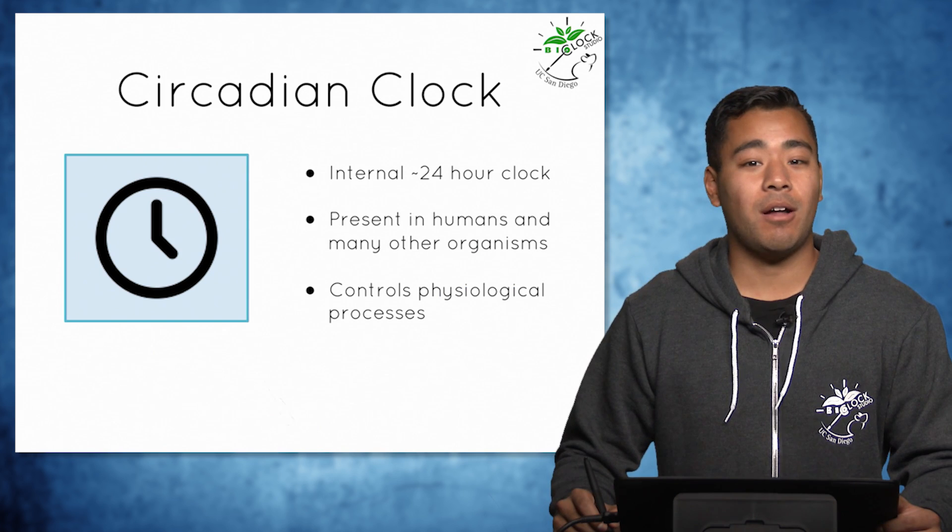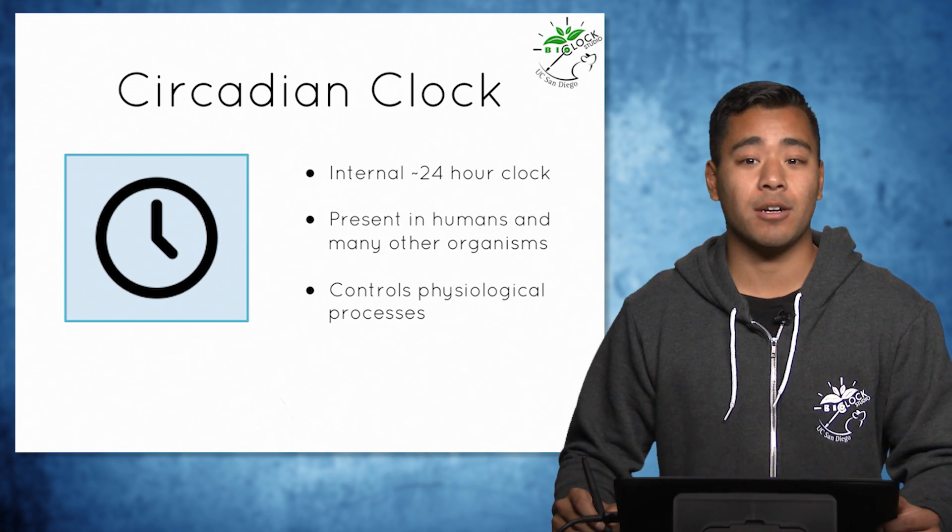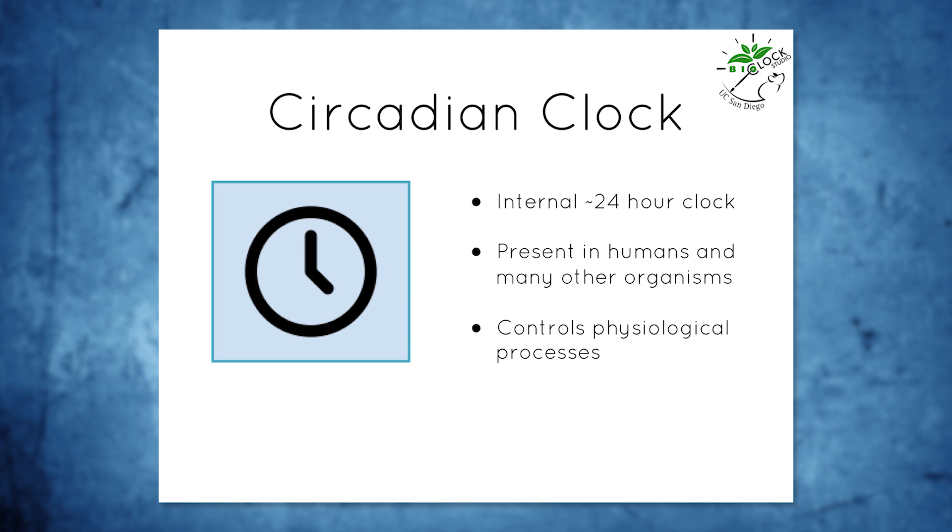One component, the circadian clock, is an internal daily biological clock present in humans and many other organisms. The word circadian comes from the Latin, meaning about a day. Thus, our circadian rhythms are 24-hour rhythms.